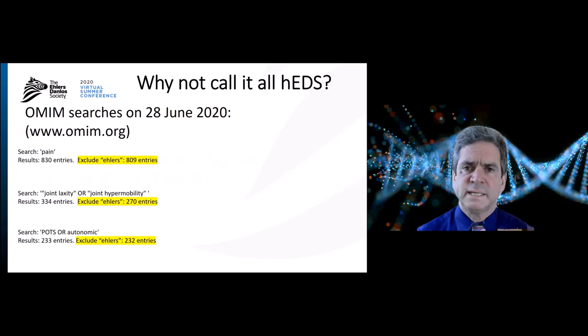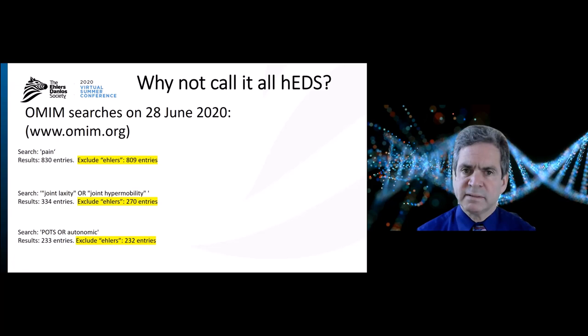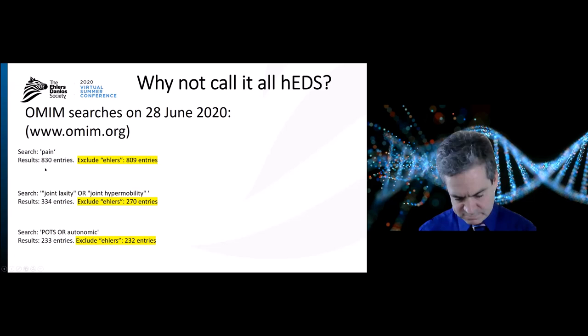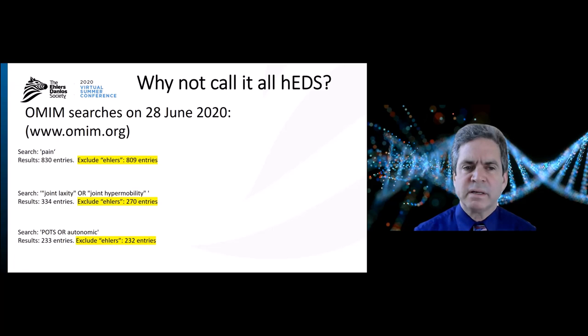Here's an example you can do at home. OMIM — Online Mendelian Inheritance in Man, at OMIM.org — is essentially an online encyclopedia of genetic conditions. If you search the word 'pain' on OMIM, you get 830 hits. If you exclude the term 'Ehlers,' you get 809. So only 21 of those 830 genetic conditions related to pain are related to Ehlers-Danlos syndrome. The other 809 are not.